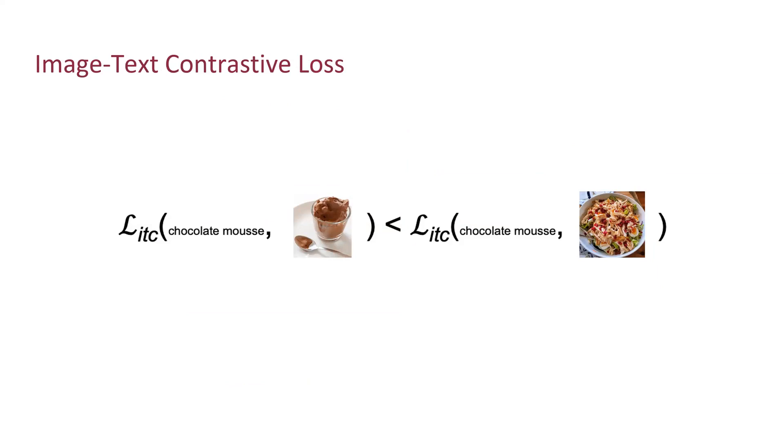We have a number of loss functions in our model. One of them is the image text contrastive loss. In this loss, the text and image encodings from the same recipe are brought closer, while encodings from different recipes are pushed apart. As shown here, we have a text chocolate mousse and an image chocolate mousse, and these two should be brought closer, while the text chocolate mousse and the image chicken salad should be pushed apart.